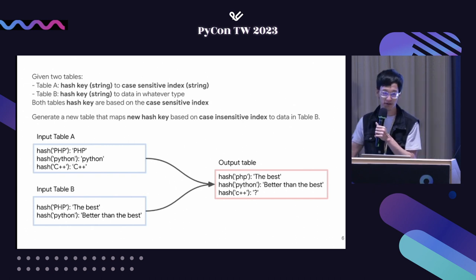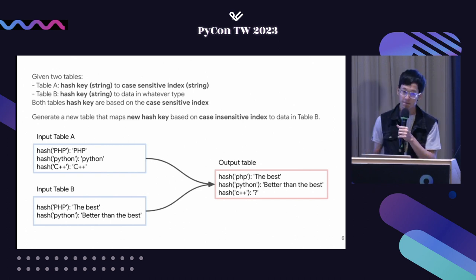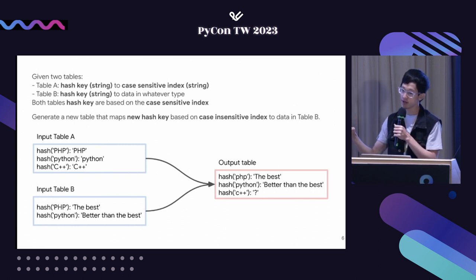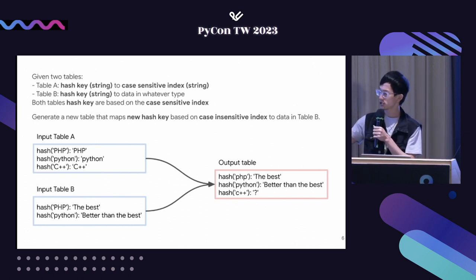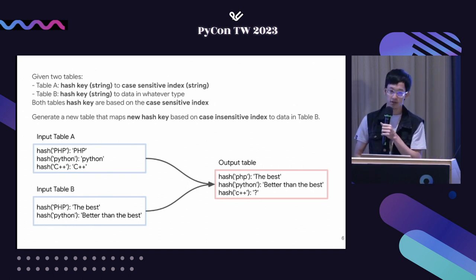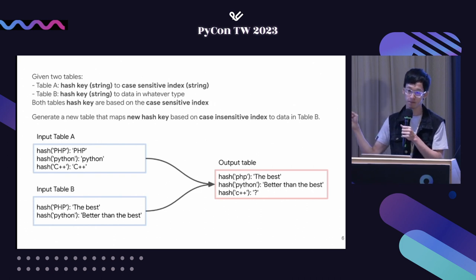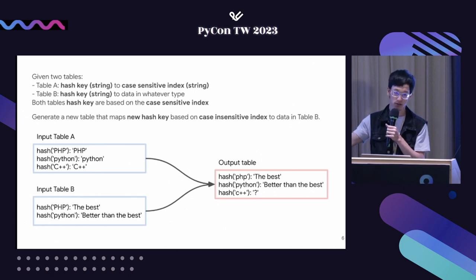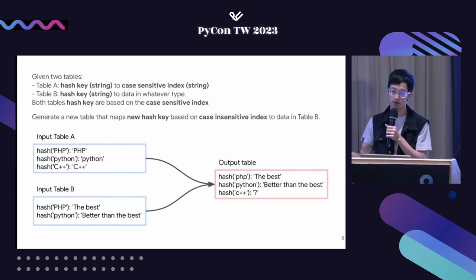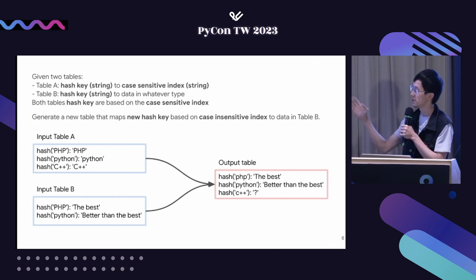What I want you to think about here is: we have an input table A, which contains a hash key to an index. Input B also contains a hash key to the data. The hash key and index are actually case-sensitive. The output should also have a hash, but this hash is based on a case-insensitive index. So if you find an index in table A, you convert it to a case-insensitive one and grab the data from table B.